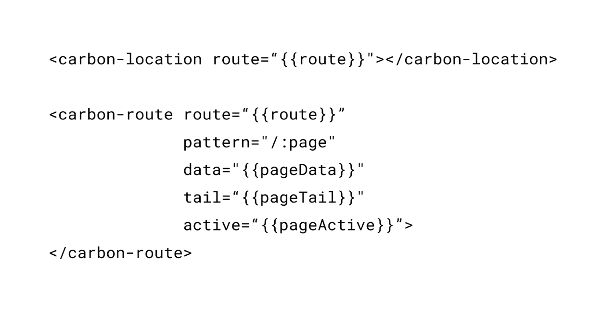So it allows you to create these modular subsections in your app. The last thing I want to mention is the active attribute. We can use this as a flag to tell us when our carbon route is matching.